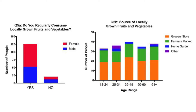Here we're looking at two graphs regarding two survey questions. The questions asked whether people regularly consume locally grown fruits and vegetables, and where most people get their produce. I asked these questions because I wanted to know people's normal habits, since this could give us an idea of who rat lungworm disease could affect the most. A majority of people said they do regularly consume locally grown fruits and vegetables, which makes this a significant topic because rat lungworm disease is more easily transferred via locally grown produce.